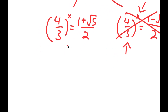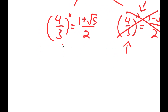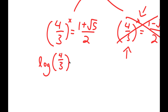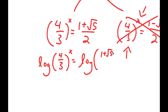To solve this equation, I'm going to start by taking the log on both sides. So I get log of 4 over 3 to the power of x is equal to log of 1 plus the square root of 5 over 2.